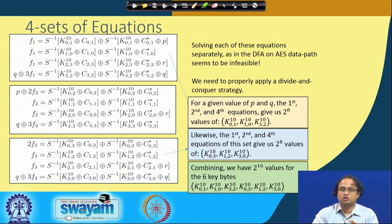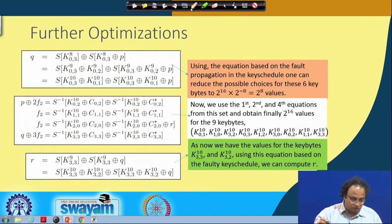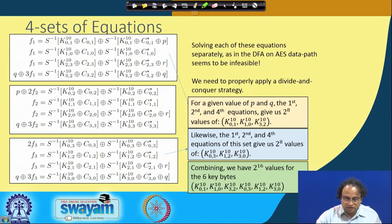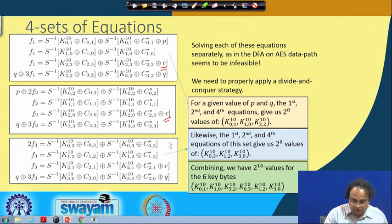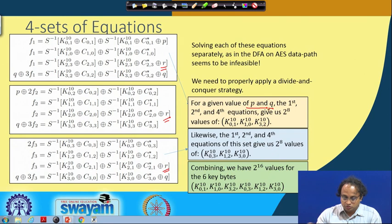Therefore, we need to develop a proper divide-and-conquer strategy using the various equations we have. We first take the 1st, 2nd, and 4th equations of each set. We observe that in the third equation of all sets there is a variable r. So we keep aside the third equations and, for a given value of p and q, we consider the 1st, 2nd, and 4th equations of each set. Note that p and q can take 2^16 values — we will multiply with all possible p and q values later.